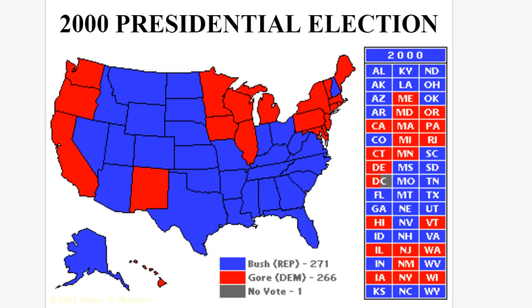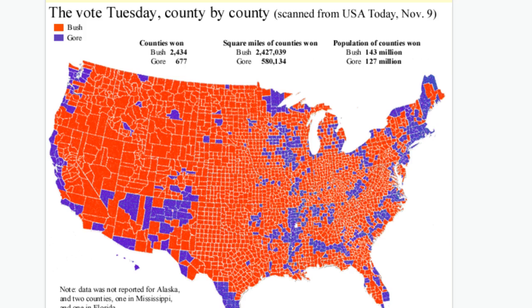Looking back at the 2000 presidential election map between George Bush and Al Gore — note the Democrat is represented in red and the Republican in blue on this particular map, opposite of the usual convention. George Bush won with 271 electoral votes; one elector did not vote, meaning if two more people had decided not to vote for Bush, there would have been a tiebreaker taking us to the House of Representatives. Bush won 2,434 counties to Gore's 677, and in square miles of counties won, Bush had 2.4 million to Gore's 580,000.